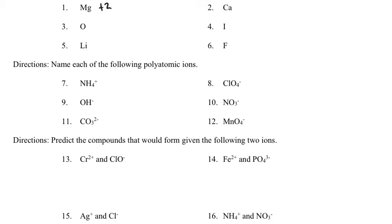Oxygen is in family 6A, so it has six valence electrons and likes to gain two electrons — that'll have a negative 2 charge. Iodine is in the halogen family, family 7A, with seven valence electrons; it wants one more, so it'll have a negative one charge. Lithium is in family 1A, so it's going to have a plus one charge — one valence electron. Fluorine is in the halogens as well, just like iodine, so it's going to want to gain one; it's got seven valence electrons, giving it a negative one charge.